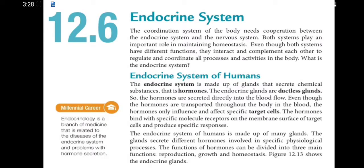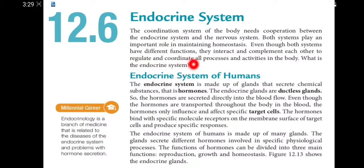The endocrine system and nervous system both play an important role in maintaining homeostasis. Both systems have different functions but they interact and complement each other to regulate and coordinate all processes in our body.